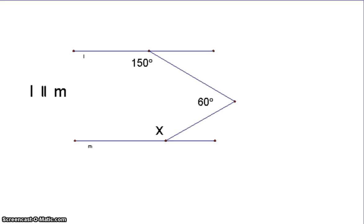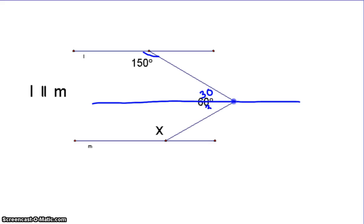For another crook problem, we again need to draw in a parallel line — and that does not mean it bisects. In this problem, we have same-side interior angles of 150° and the top part of 60°, which makes the top part 30°. Since the entire angle is 60°, we have 30° left at the bottom. It only works out this way because that angle is 150°. Between the two parallel lines, 30° and x are same-side interior, so x is 150 degrees.